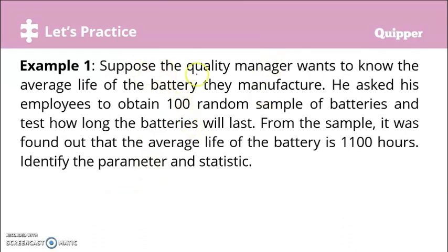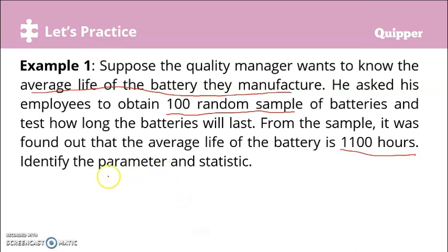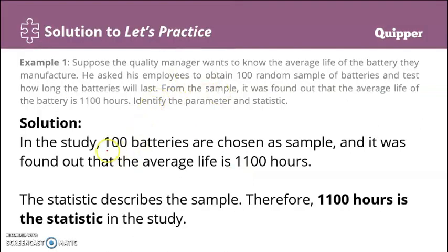Let's practice. Suppose the quality manager wants to know the average life of the batteries they manufacture. He asked his employees to obtain 100 random samples of batteries and test how long the batteries will last. From the sample, it was found out that the average life of the battery is 1100 hours. In this study, 100 batteries were chosen randomly as a sample, and the average life found was 1100 hours.